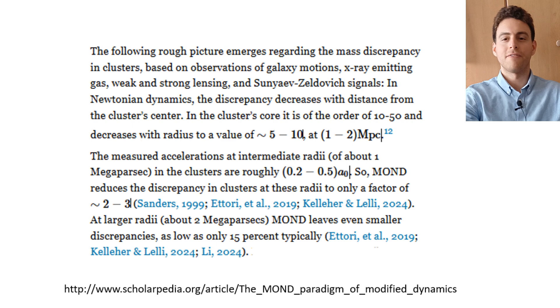In particular, one finds mass discrepancies of about 50 to 1 or 10 to 1 ratio at the cores, and 7 to 1 ratios at 1 MPa in clusters. With MOND, the discrepancies are reduced to 3 to 1 or 2 to 1 at 1 MPa, and even smaller at higher distances from the core.